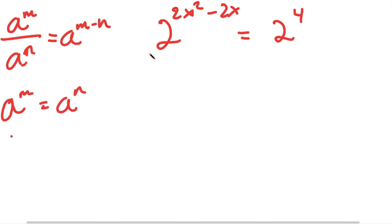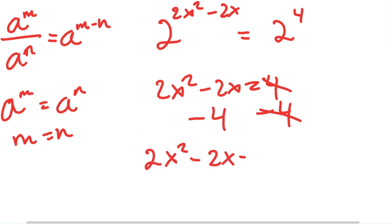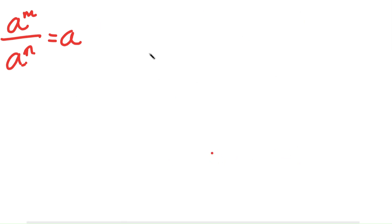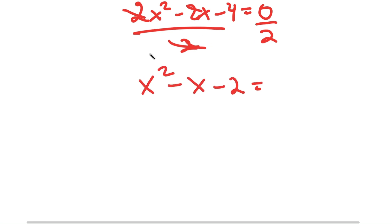Another property: if a to the power of m is equal to a to the power of n, then m is equal to n. So in this case 2x squared minus 2x is equal to 4. Subtracting 4 from both sides gives 2x squared minus 2x minus 4 equals 0, and dividing both sides by 2 gives x squared minus x minus 2 equals 0.